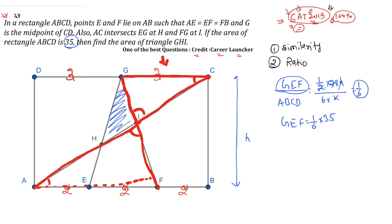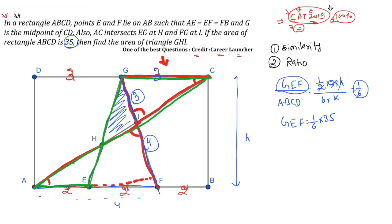The lines are parallel and there is a common angle theta, confirming similarity. The base of one triangle is 3 and the total length is 4, so the side ratio is 3:4, meaning GI to IF = 3:4. Similarly, for triangles GHC and AHE: since AE is parallel to GC, we get equal transverse angles and a common angle. GC is 3 and AE is 2, so the ratio is 3:2.